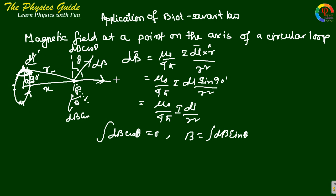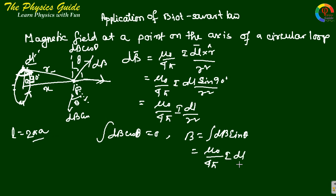If we take the integration limit in terms of dL, the total length L equals 2 pi A, which is the perimeter of the loop. So we integrate: mu naught by 4 pi times I dL sin theta by R squared, with the total integral of dL giving 2 pi A.